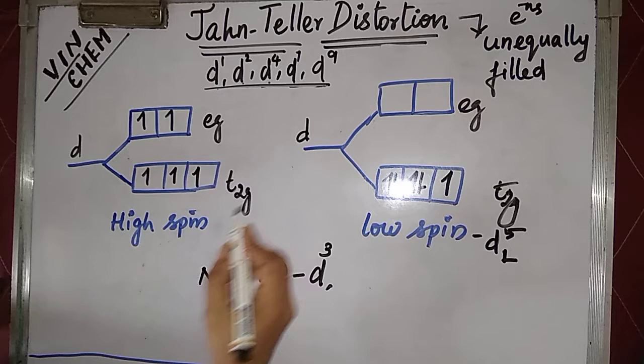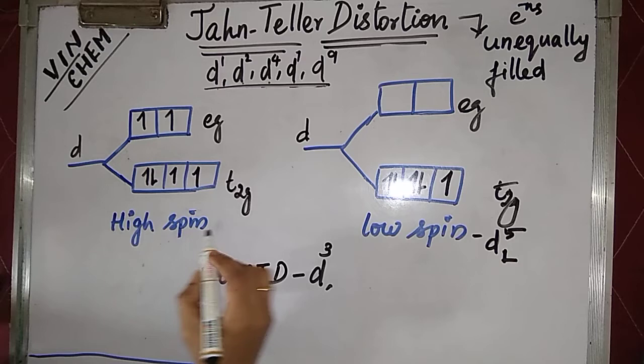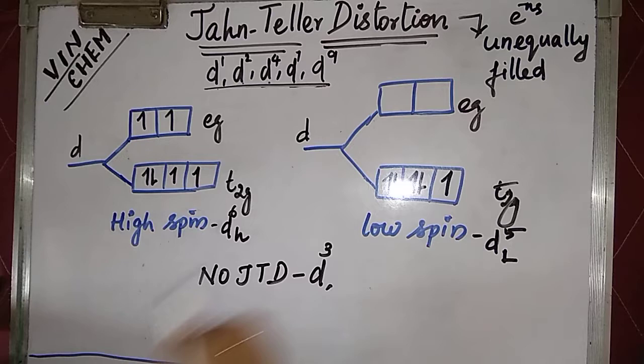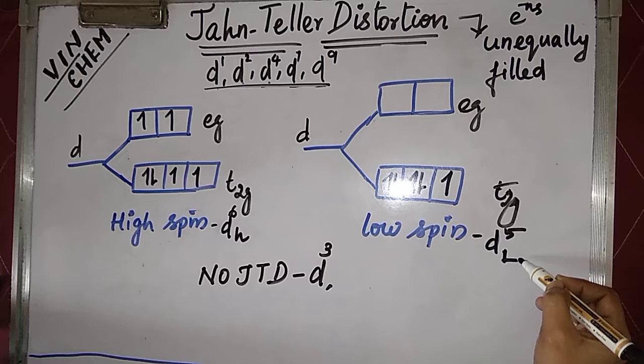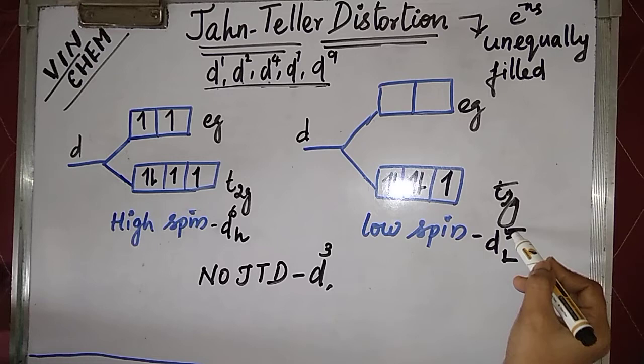For d6 high spin, Jahn-Teller distortion is there. So other than the original five cases, the two additional cases which have Jahn-Teller distortion are: d5 low spin and d6 high spin.